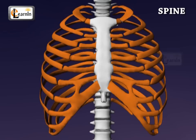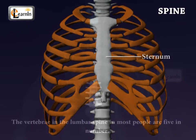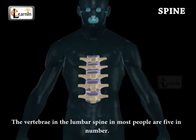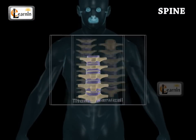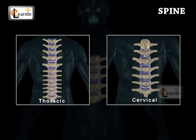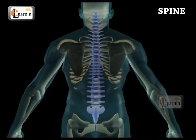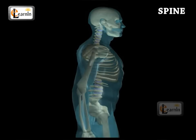There is another flat bone on the ventral midline of the thorax, which is called the sternum. The vertebrae in the lumbar spine in most people is five in number. They are larger than the thoracic or cervical spine, and carry most of the body's weight, supporting flexibility and extension.